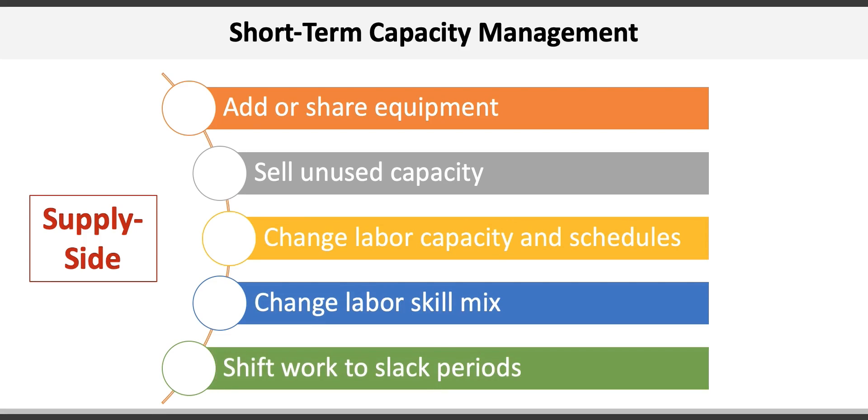The last supply side approach is adjusting capacity to shift workload to slack periods, which may help create buffer inventory to meet peak demand periods, without having to hire additional workers or incur overtime.